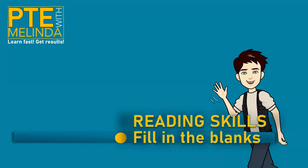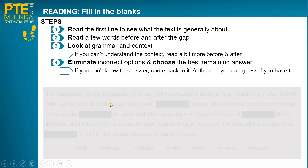This is our second fill-in-the-blanks exercise, so I'm going to quickly go through those steps again just to remind you. Step one: read the first line, see what the text is generally about, and that's going to help you anticipate and guess what kind of words you might need in each blank or gap. Step two: read a few words before and after the gap.